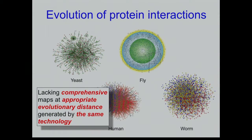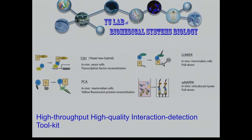People have tried to do comparisons by combining all interactions in the literature, which improves coverage. But interactions in the literature are detected by completely different assays — CoIP, mass spec — and they all have different false positive and false negative rates. For almost all of them, you don't know those rates, so you cannot plug them into the equation. We really need to use the same technology where you know the false positive and false negative rates.